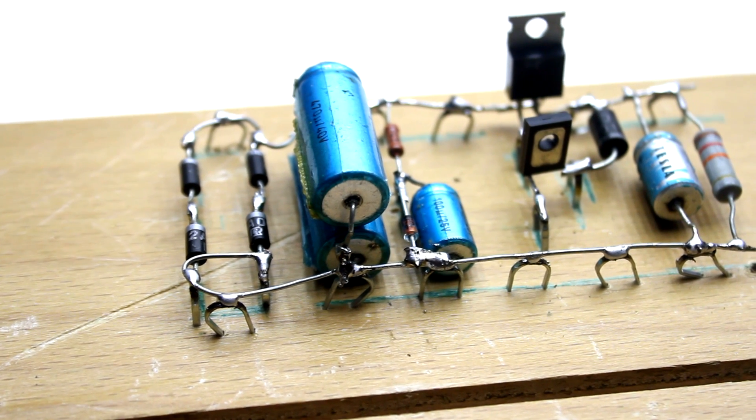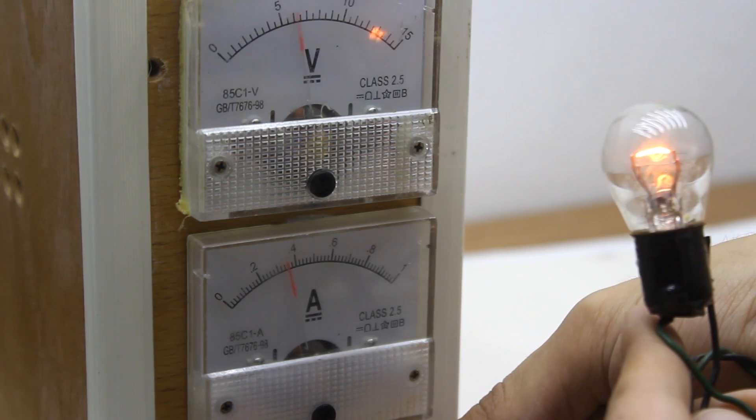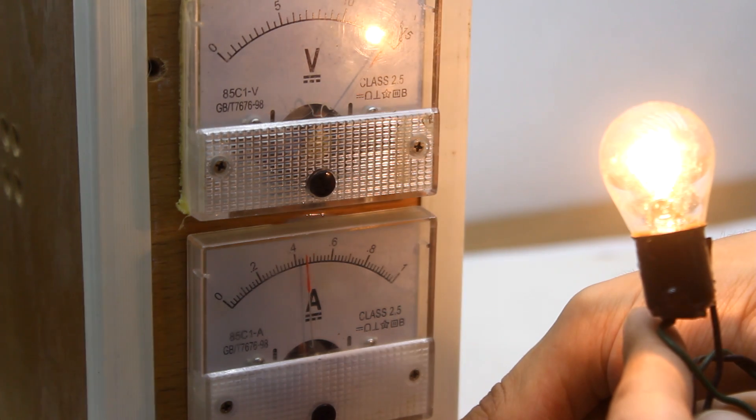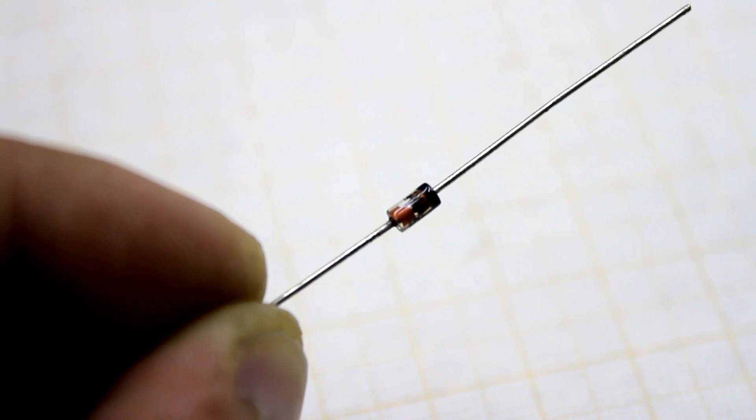The power supply is linear, built on two transistors. It provides a smooth adjustment of the output voltage in the range from 0 to 15 volts. The voltage can be made higher if you replace the zener diode with another with a higher voltage. It specifies the upper limit of the output voltage.